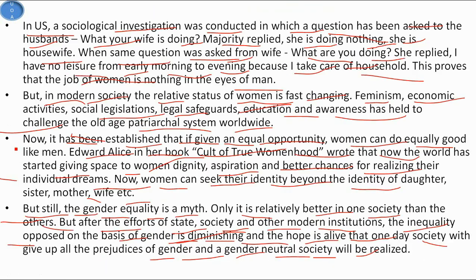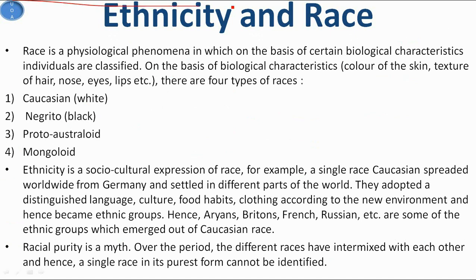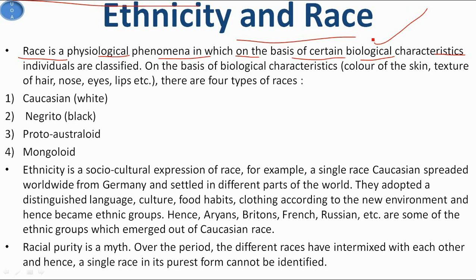Now we move to ethnicity and race. Race is a physiological phenomenon in which individuals are classified on the basis of certain biological characteristics. Similar to how sex and gender are differentiated biologically, race is also a biological or physiological phenomenon, whereas ethnicity is the socio-cultural expression of race.